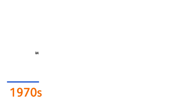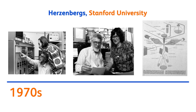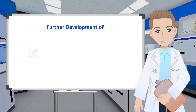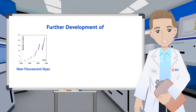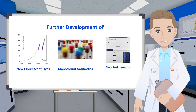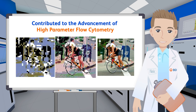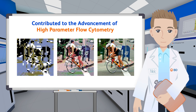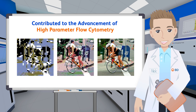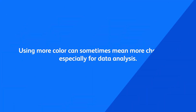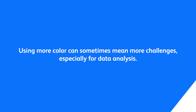As we know, the first commercial flow cytometry was created by the Heisenberg lab with the help of a BD engineering group in the early 1970s. The further development of new fluorescent dyes, monoclonal antibodies, and instruments has contributed to the advance of high-parameter flow cytometry, which many scientists leverage today. Using more colors can sometimes mean more challenges, especially for data analysis.